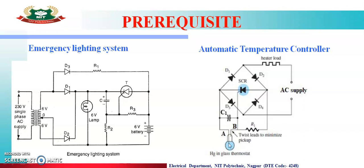अगर desired temperature से कम है तो यह A और B terminal short circuit नहीं होंगे। अगर यह दो terminal short circuit नहीं हुए तो जैसे कि B terminal gate को connected है और A terminal cathode को connected है, तो gate और cathode terminal short circuit नहीं होंगे, तब तक SCR on रहेगा।